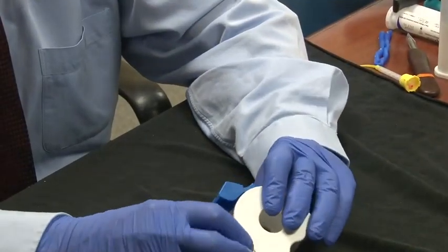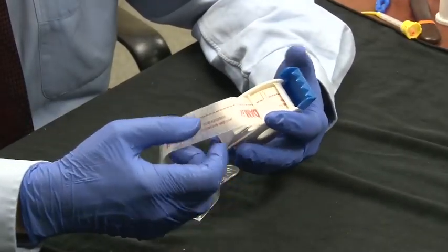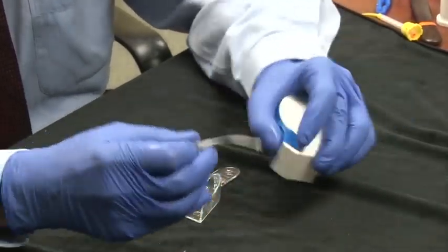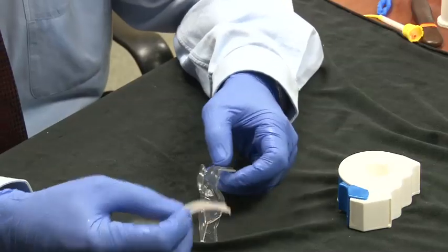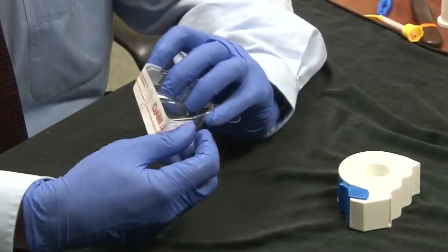Another time that you could use the Dammit is just on your regular alginate study models. So if you just, again, take some out, put it on the back of your tray. You've already sized your tray. Everything's fine. Put it across the back.